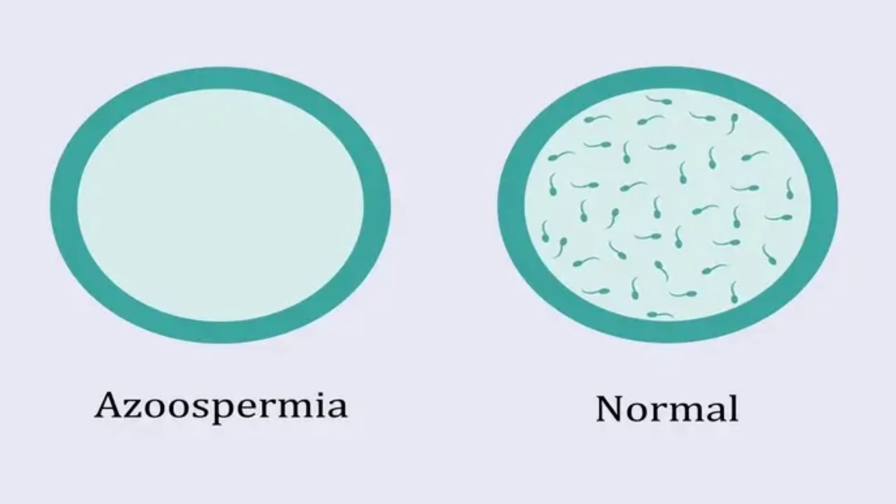The next cause is aspermia — that means complete absence of sperms in the ejaculate. Another cause is related to psychological disorders, for example erectile dysfunction or premature ejaculation. Erectile dysfunction is the inability of the male to ejaculate sperms during sexual intercourse, and premature ejaculation is when they ejaculate very early and are unable to deposit sperms into the vagina.